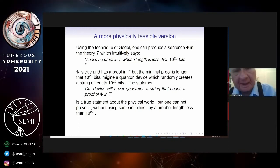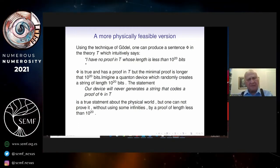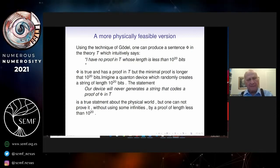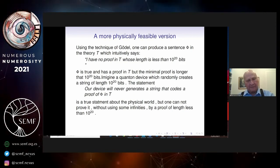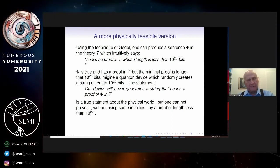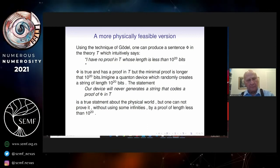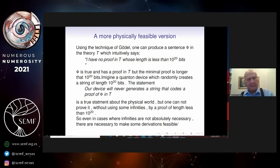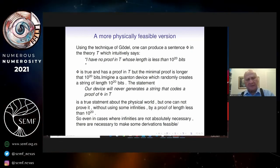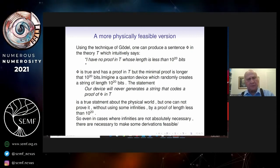So the use of infinities, maybe there are some physical facts that you can, in principle, prove in your finitary theory, but in order to do it in a feasible time, if you want to get a formal proof in your theory, you'll need a very, very, very long proof. So even in cases where infinities are not absolutely necessary, they're necessary to make some derivations feasible.